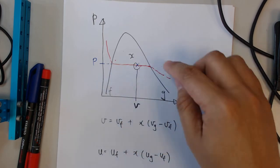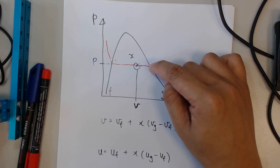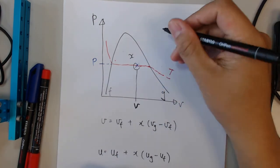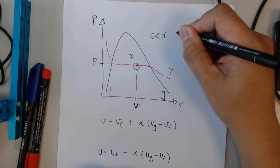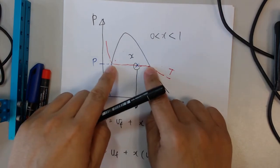All the way until the end here, where everything has converted to gas, your dryness fraction is now equals to 1. So dryness fraction ranges between 0 and 1 within the wet steam region.